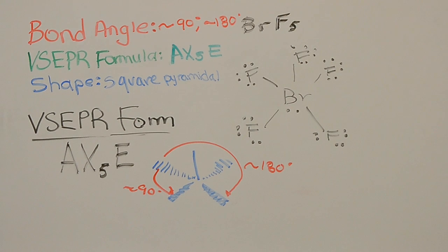Bromine pentafluoride has a bond angle of approximately 90 degrees and approximately 180 degrees. The VSEPR formula is AX5E1 and the shape is the square pyramidal.